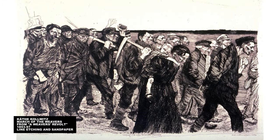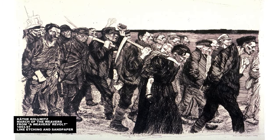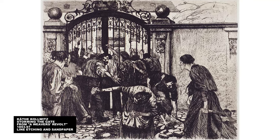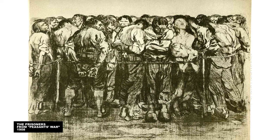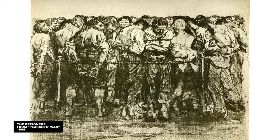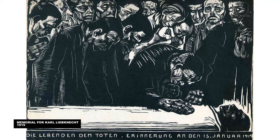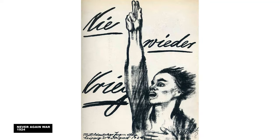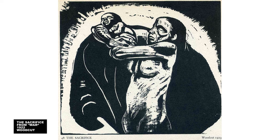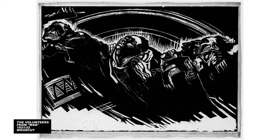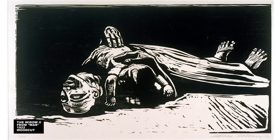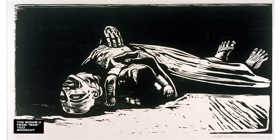German artist Käthe Kollwitz turned to printmaking in the early 1890s, depicting oppressed, poverty-stricken, and yet still defiant workers. She realized the prints' potential for social commentary — they were inexpensive and easily reproducible, and her work was widely circulated and admired. Kollwitz bore witness to both world wars, losing a son in the first and a grandson in the second, fusing her own experience of tragedy with the suffering of those around her.